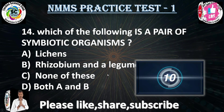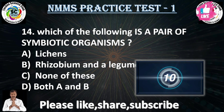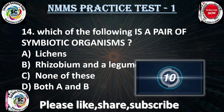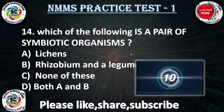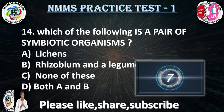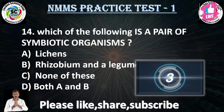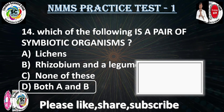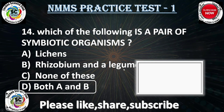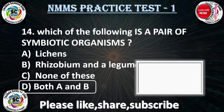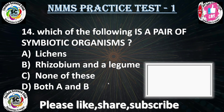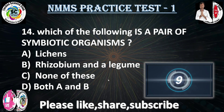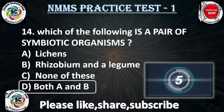Question No. 14: which of the following is a pair of symbiotic organisms? The answer is Option D — both A and B, which are lichens and Rhizobium. Option D is the correct answer for the 14th question.